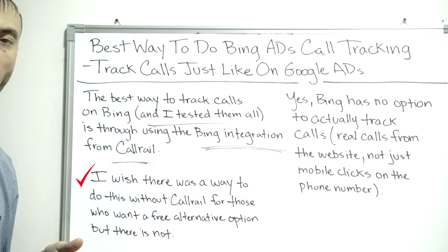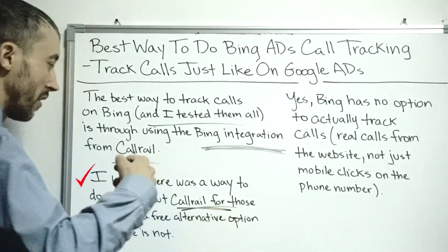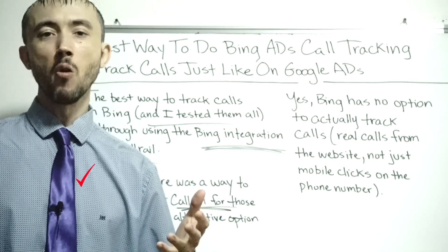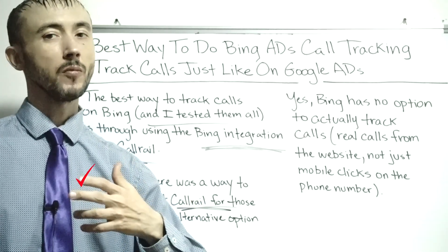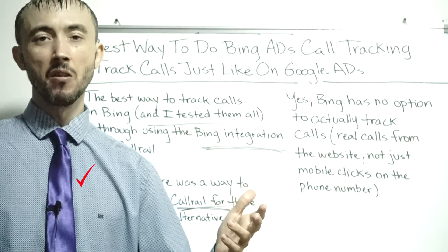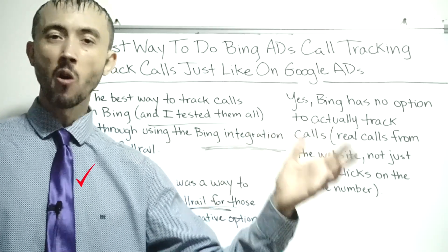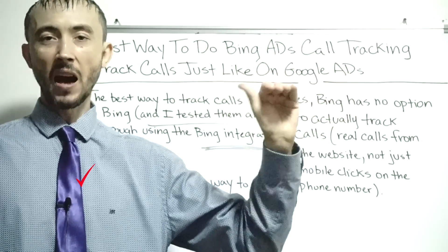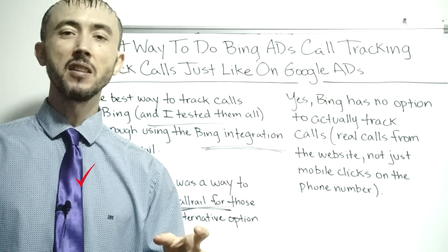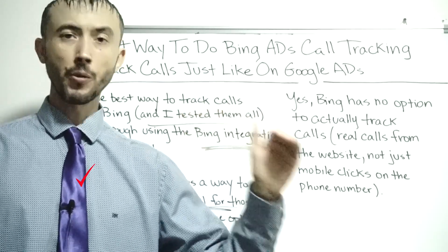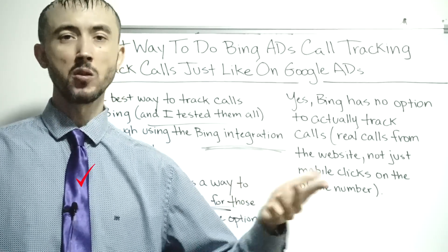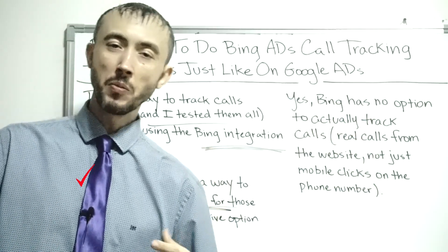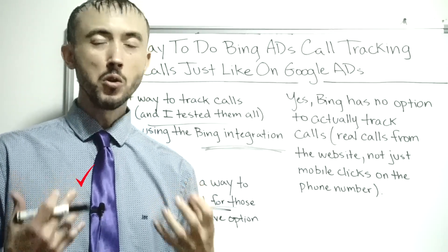I wish there was a way to do call tracking through Bing without needing CallRail, but unfortunately there's just not an option. So for the frugal people who don't want to pay the 50 to 100 dollars a month to track calls on Bing, there isn't another option. To save 50 bucks and throw away your tracking data is completely idiotic — you're going to make 10 times that 50 dollars back easily. The only time it would not make sense is if you were spending less than 300 dollars a month on Bing advertising. If you're spending more than that, do your call tracking.